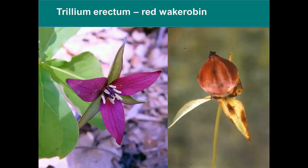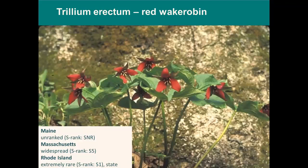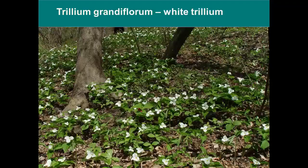Trillium erectum, the red wake robin, is the more common Trillium you might see across the region. It's the common Trillium in moist deciduous and sometimes mixed forests throughout New England, with fetid-smelling flowers that attract carrion flies — leading to an obvious explanation of its carrion color, this kind of red flesh color. While it is called the red wake robin, it does sometimes exhibit white, yellow-green, or paler red flowers. On the right is the capsule-like fruit it produces. It's one I think of seeing especially on edges of really rich forests, particularly through Vermont and New Hampshire, in great numbers. It is unranked in Maine, widespread in Massachusetts, and yet extremely rare in Rhode Island — a state rarity there.